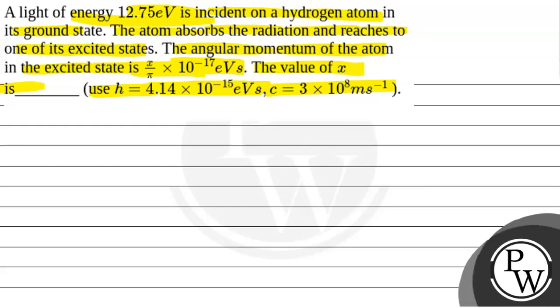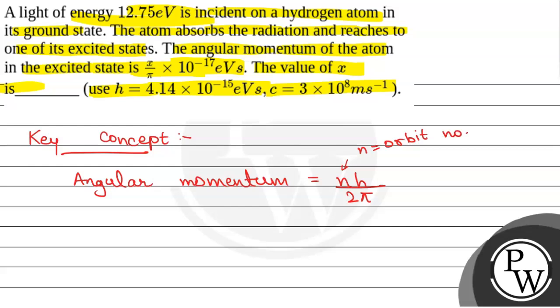So we will solve this question. First of all, we will see what will be the key concept within this question. The key concept will be angular momentum of the atom in the excited state is given by nh/2π, where n is the state or orbit number.